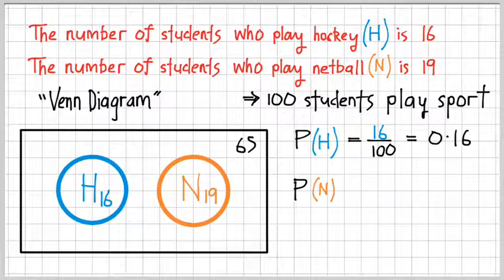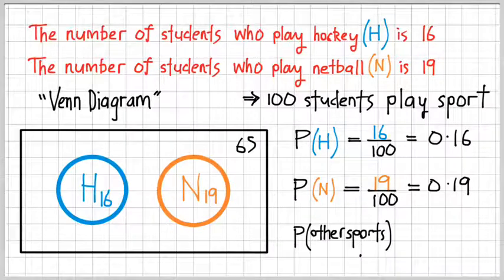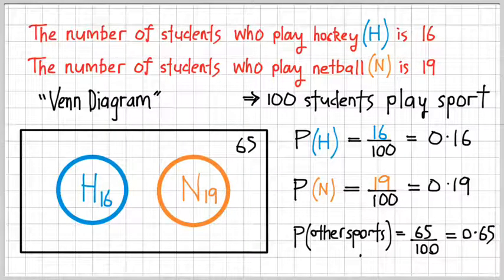We can also calculate the probability of a student playing netball. So that's going to be 19 divided by all possible outcomes, or the total number of students in this case. And that gives us 0.19. There's one more probability that we can calculate, and that is the probability of students playing other sports. And that's represented by that 65 on the top right corner of the Venn diagram. And at the end of the day, we get a probability of 0.65.